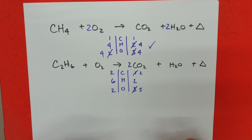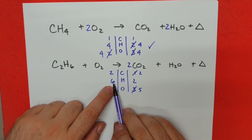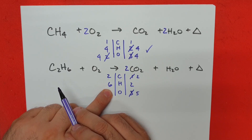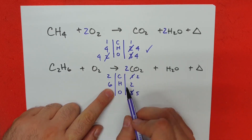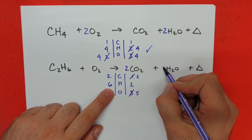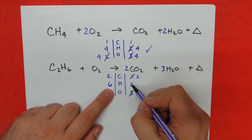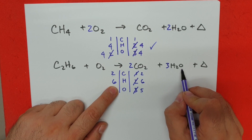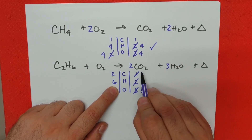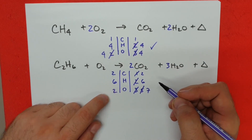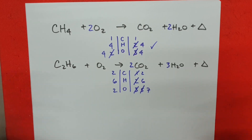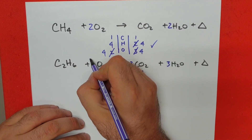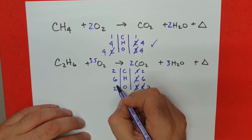Now let's balance the hydrogen. We have six on this side, so I'm going to add a three in front of the water. That changes my hydrogen count to six, which is now balanced. But it also changes the oxygen count — we have three oxygen atoms from water plus four from carbon dioxide, that becomes seven. On the reactant side we have two. What could we add? We could add 3.5, and this changes to seven.